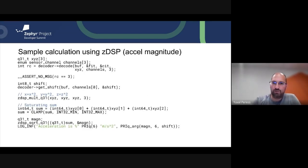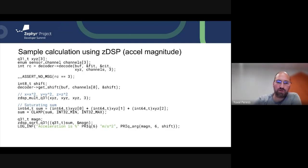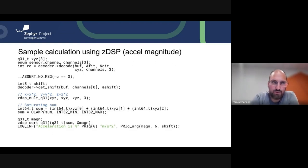Here's a calculation sample: assuming we're getting accelerometer XYZ, we calculate the magnitude of the vector. We take the square of each component using zdsp_mult_q31, do a saturating sum of X, Y, and Z, then take the square root of that value. Keep in mind the square root is not yet ported but is scheduled for Q3 of 2023, so it will be available soon in the DSP library.